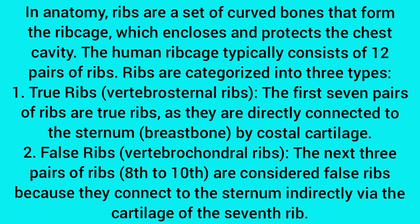False ribs, also called vertebro chondral ribs, are the next three pairs — the 8th to 10th ribs. They are considered false ribs because they connect to the sternum indirectly via the cartilage of the seventh rib.